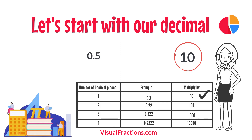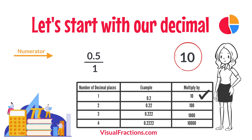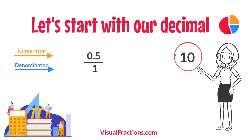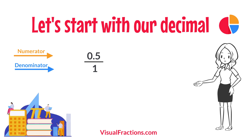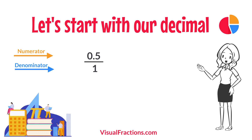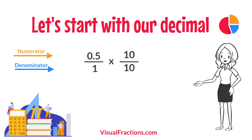To convert this decimal into a fraction, you initially put it over 1, essentially treating the decimal as the numerator in a fraction where the denominator is 1. This sets up the conversion process where we multiply both the numerator, the decimal, and the denominator, 1, by 10 because there is one decimal place.